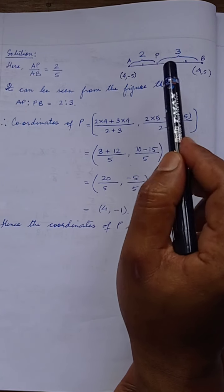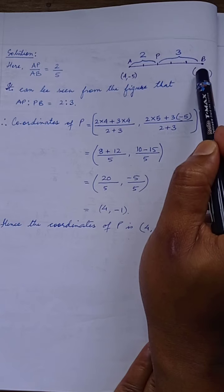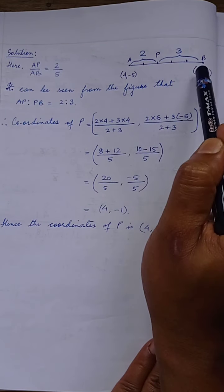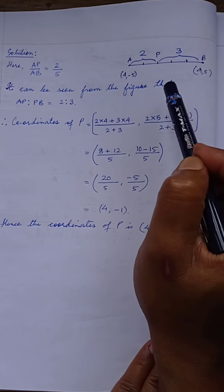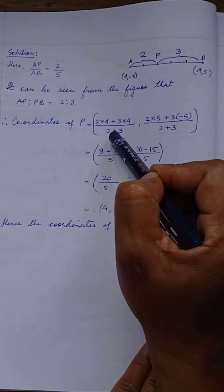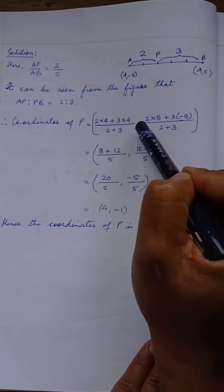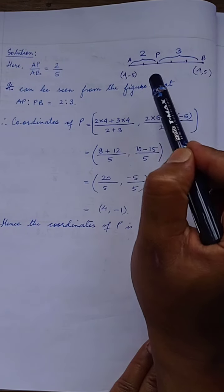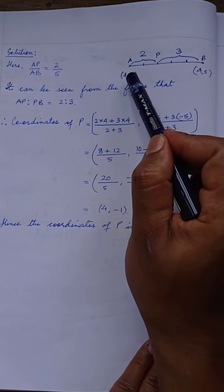Using ratio 2:3 we solve directly. For X: M1·X2 + M2·X1 divided by M1 + M2, that is 2×4 + 3×4 divided by 2+3. For Y: we use the second numbers (the Y-coordinates), going from M1 to Y2 and M2 to Y1 — so 2×5 + 3×(−5) divided by 2+3.